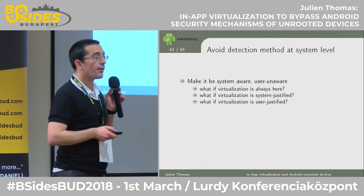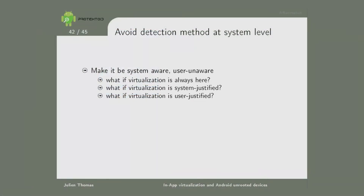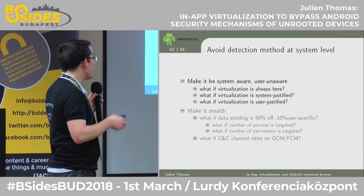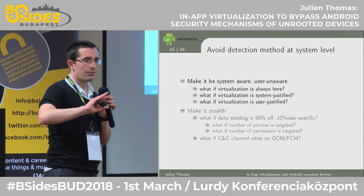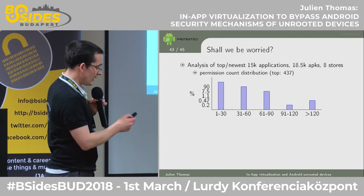How to avoid detection at the system level? First, make the virtualization obvious for legitimate reasons — you are a privacy app or a multi-instance app, so it's justified. Then be user-specific: being user-specific is very good because you can minimize the number of process activities in your manifest definition and minimize the number of permissions you request, making it very hard to be detected from the footprint, for example in the manifest definition.